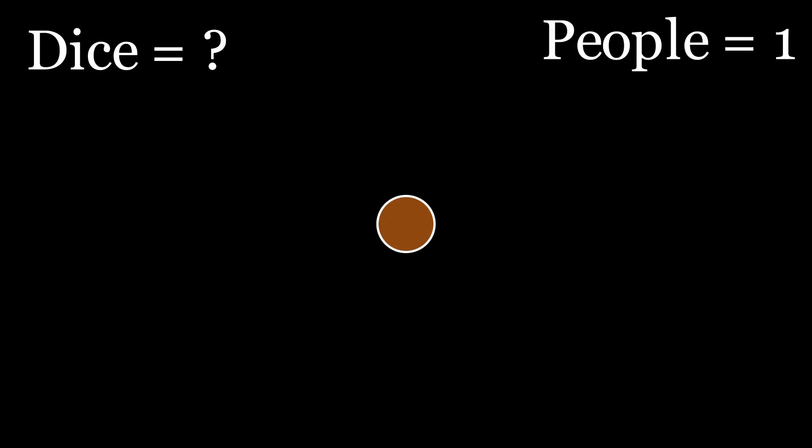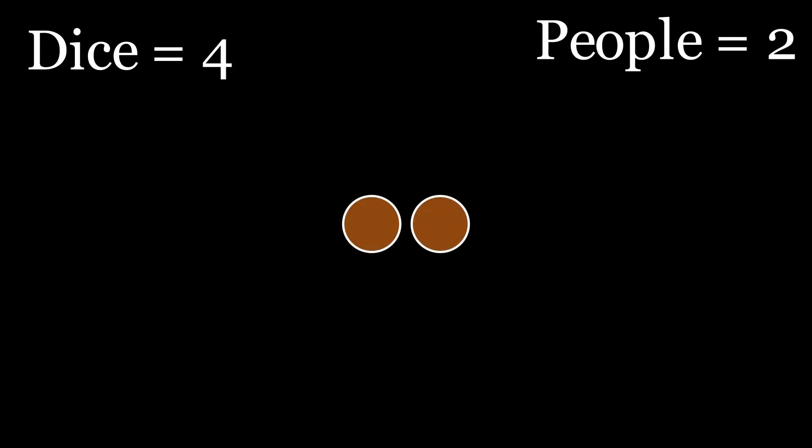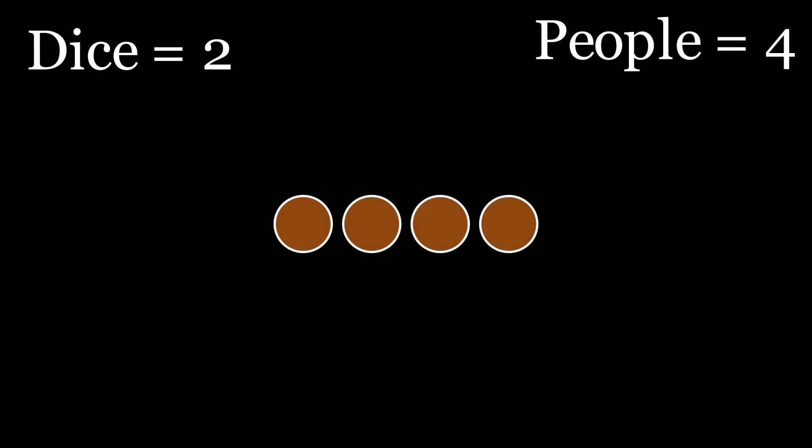There is a killer who catches people in a very strange way. First he catches one person, then he throws a six-sided die. If it lands on a six, he kills the person and the game ends. If it lands on anything else, he sets the person free, but now he catches two people. He rolls the die again. If it doesn't land on a six, he sets them free and brings in four people. You can see the pattern, each time he doubles the number of people.